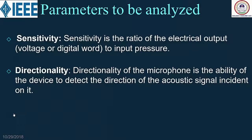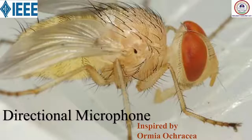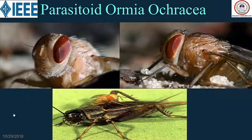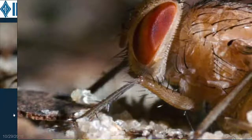For a microphone researcher, two important parameters are sensitivity and directionality. I worked on a directional microphone inspired by a fly called Ormia ochracea — a parasite that lays its larvae on the cricket insect. These are pictures of the fly, with a blown-up version showing exactly where the hearing organ sits.